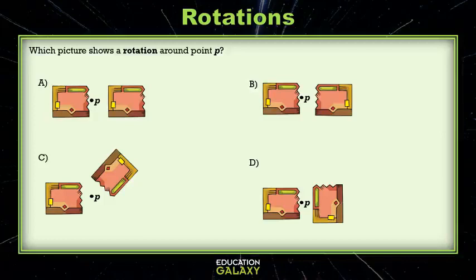Which picture shows a rotation around point P? So we're looking for that turning point. For A, it just slid right over there. Well, slide is a translation, so it can't be A. B, if I were to rotate it around point P, these can be tricky.